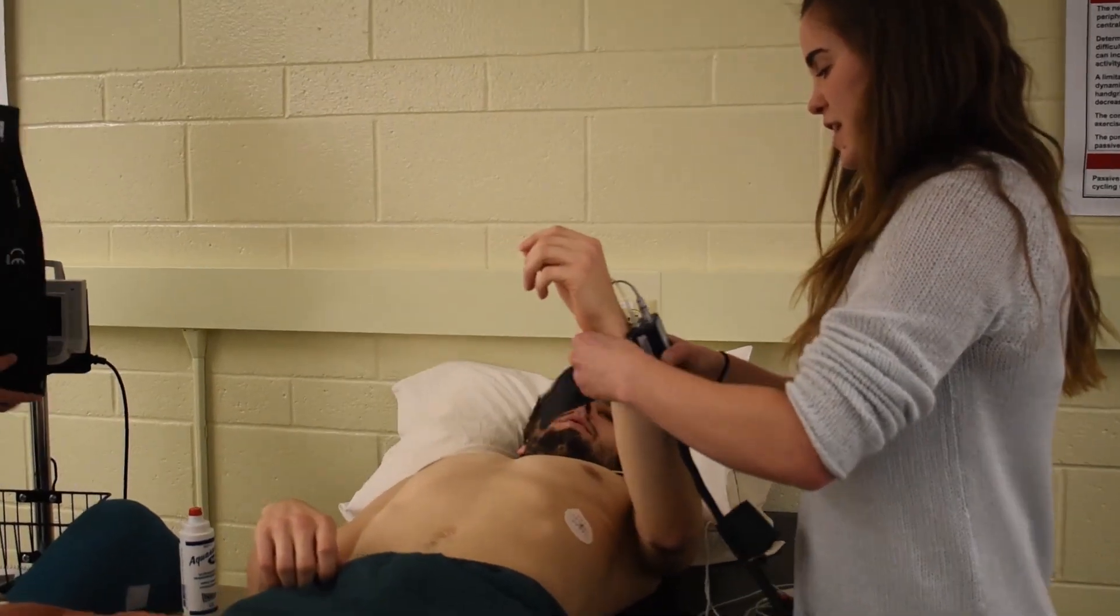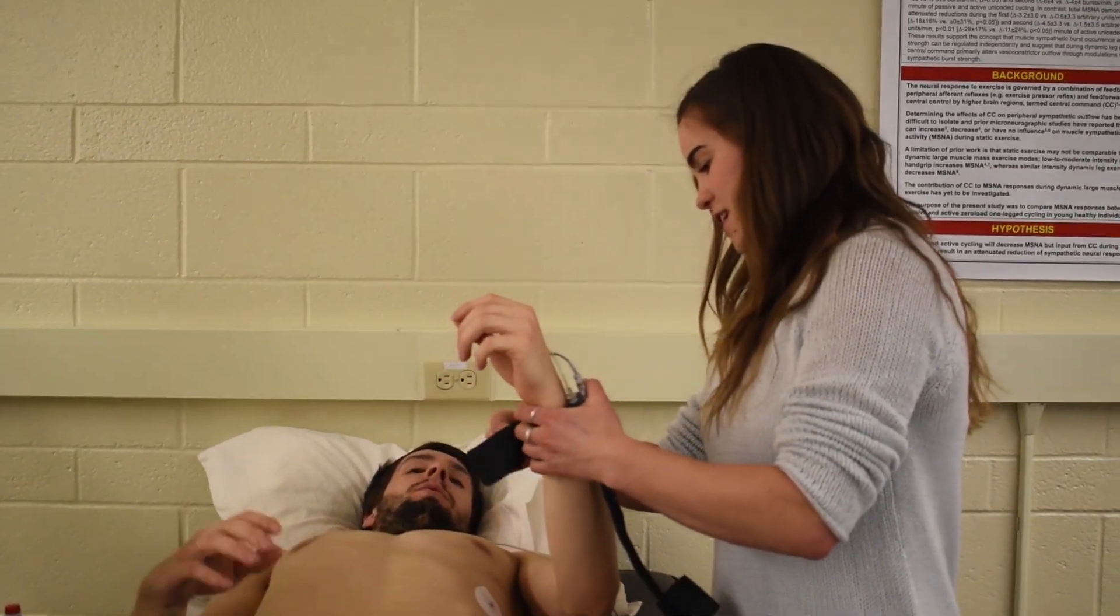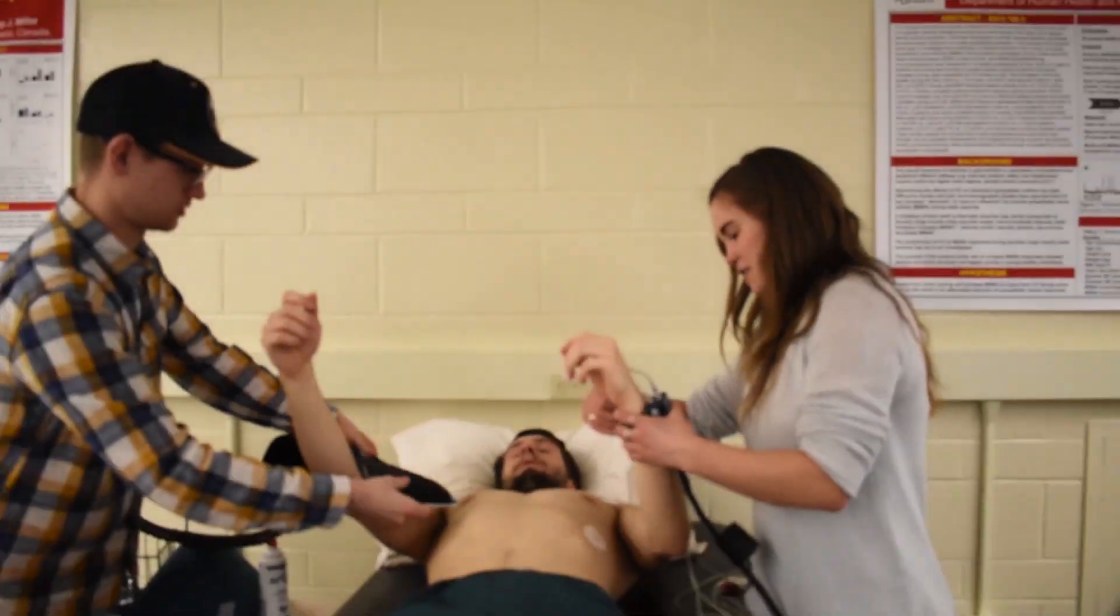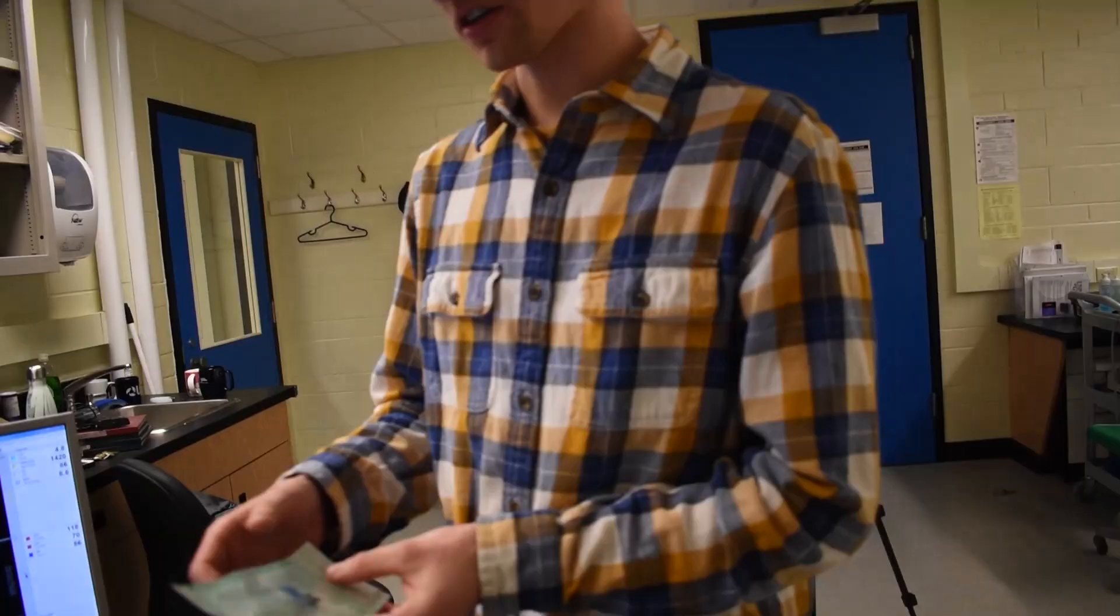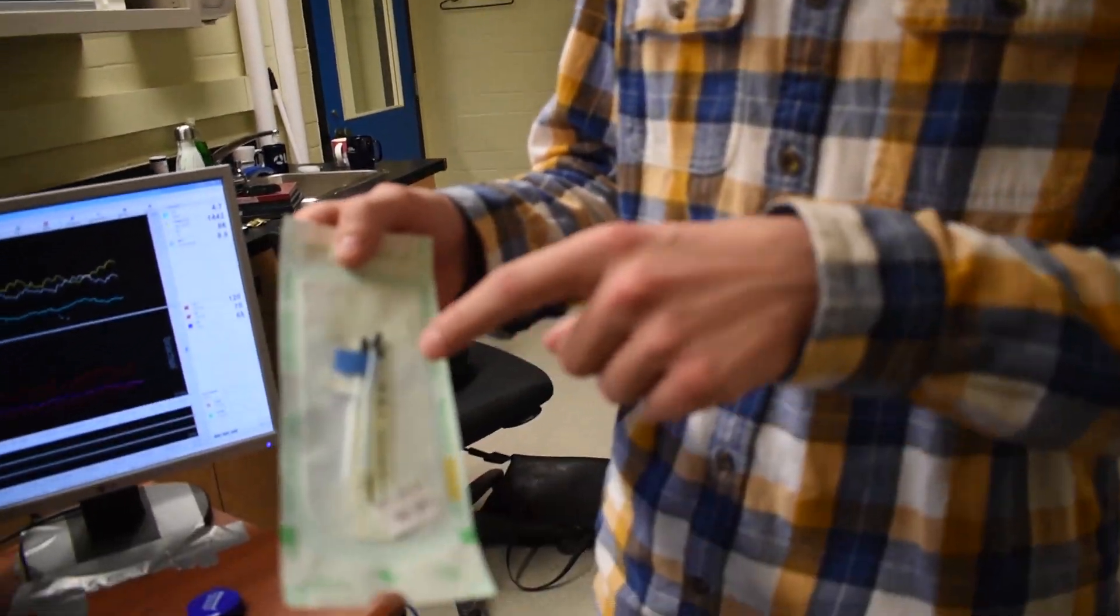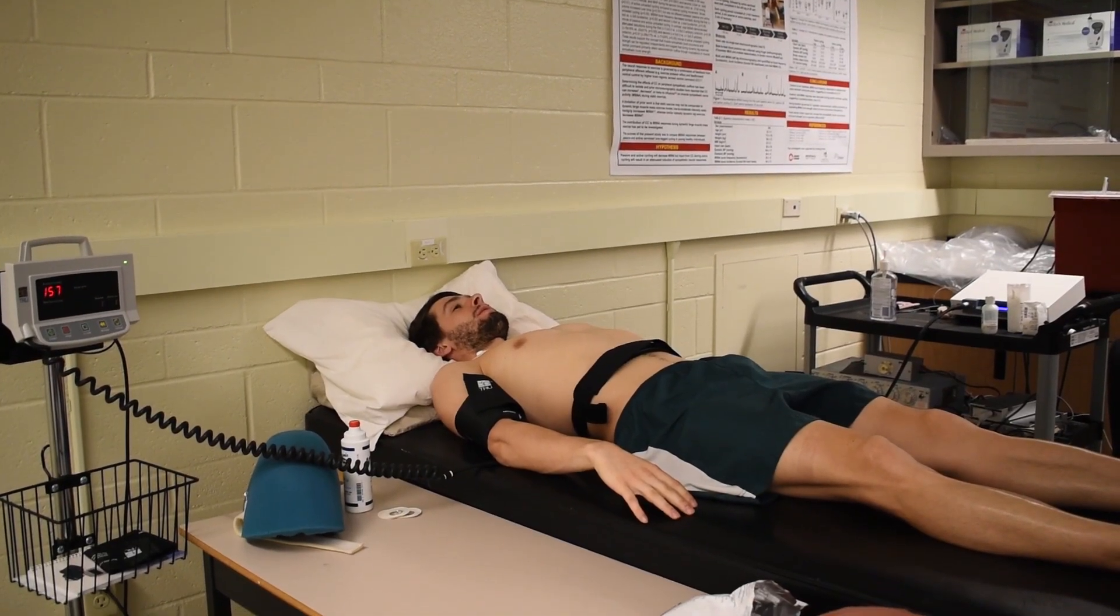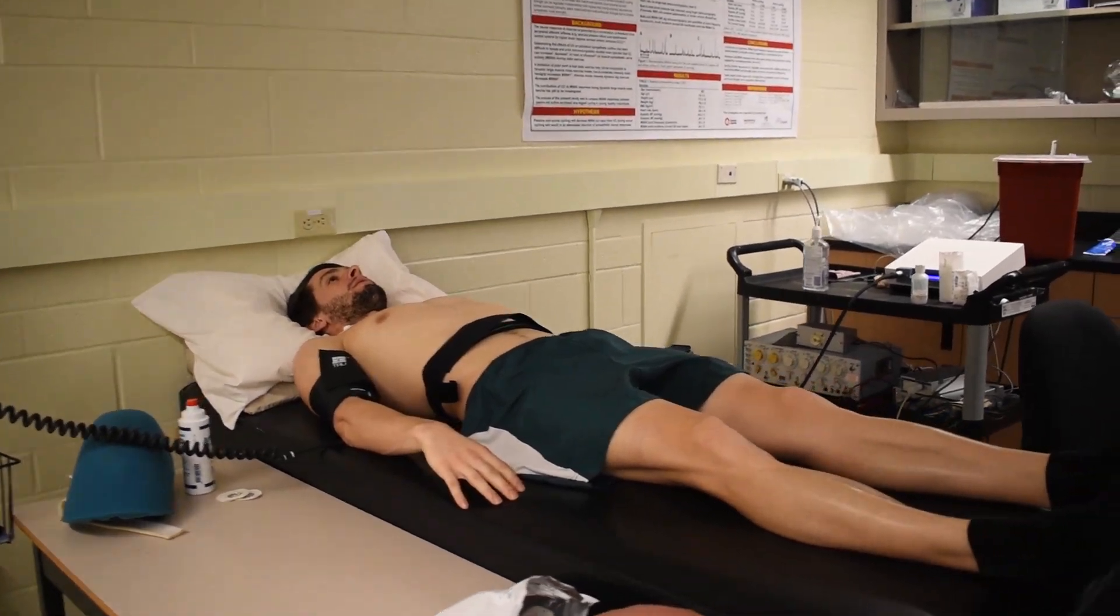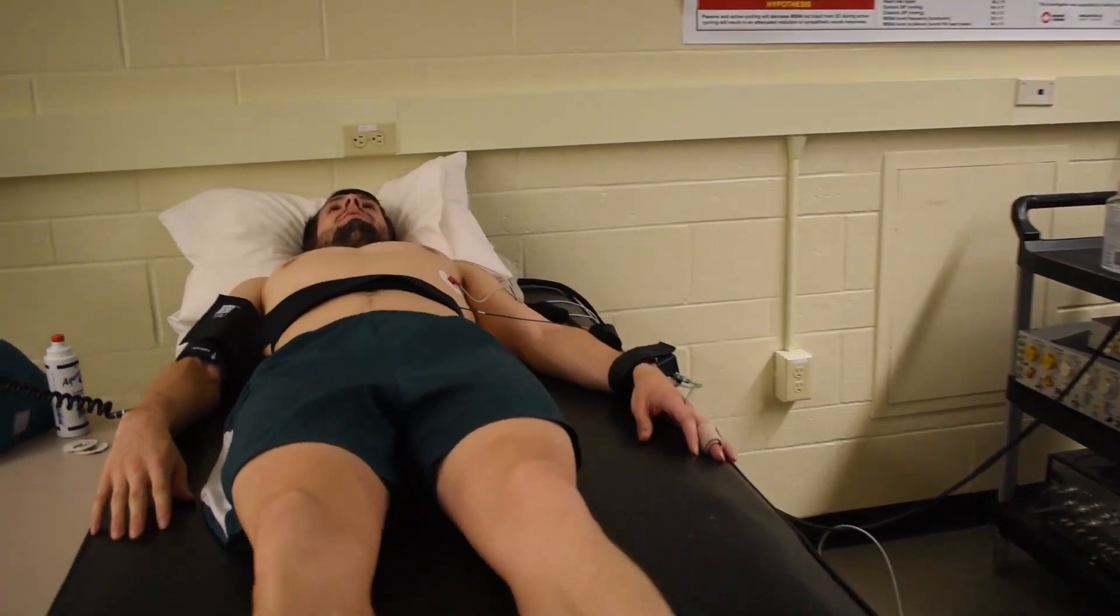For the MSNA, we measured the subjects before and after their three week training. They come into the lab and just have to lie down. We spend about an hour with these microelectrodes trying to find a sympathetic nerve fiber within the common fibular nerve. Once we have that site, the participant just lies still and we get ten minutes of their regular ten minutes.